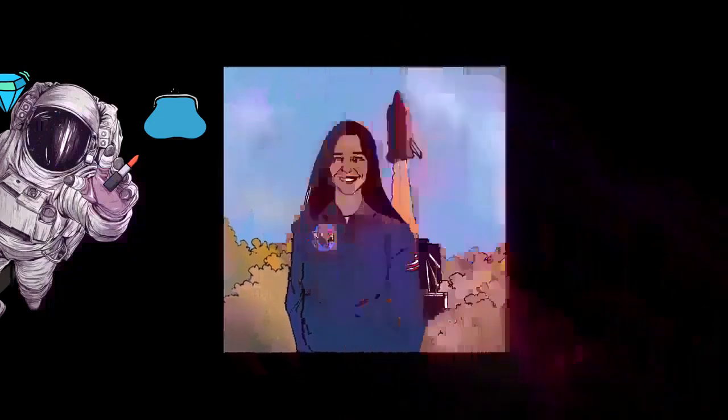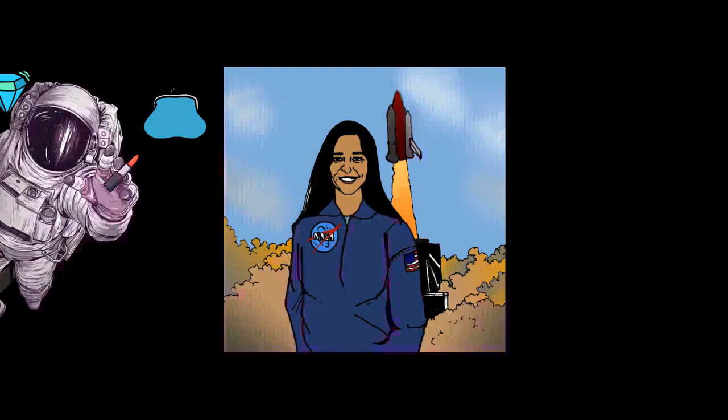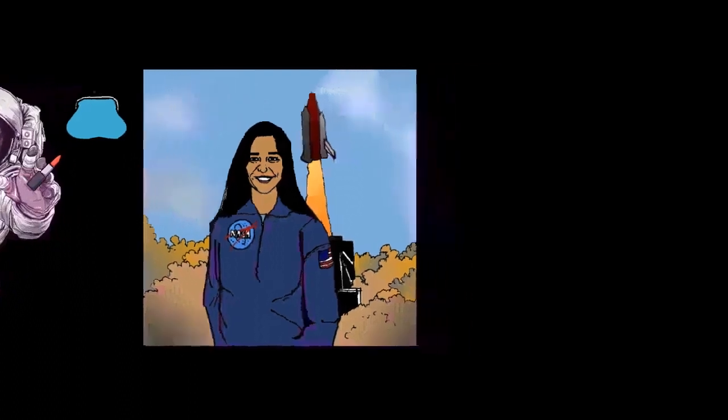The crew performed nearly 80 experiments studying Earth and space science, advanced technology development, and astronaut health and safety. During the launch of STS-107, Columbia's 28th mission, a piece of foam insulation broke off from the space shuttle external tank and struck the left wing of the orbiter.